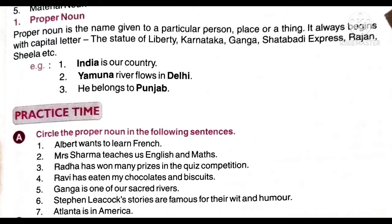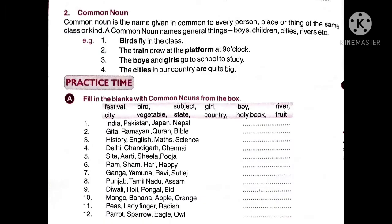After that we will see common noun. The second noun is common noun. Common noun kya hota hai? Common noun is the name given in common to every person, place or thing of the same class or kind. For example, the train drew at the platform at nine o'clock. Train — no specific name was given. If we had said Shatabdi Express, that would be a proper noun. But here only train is mentioned, which everyone knows — so train is a common noun.